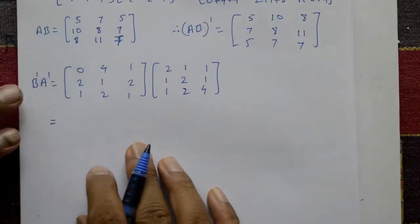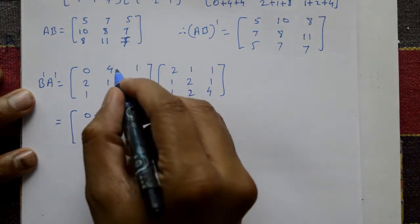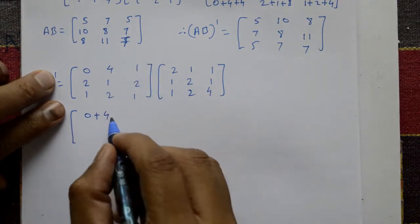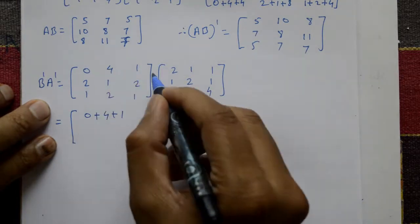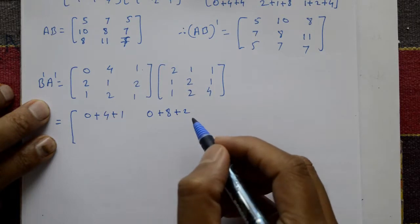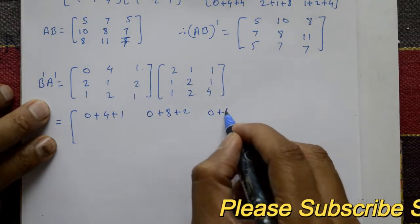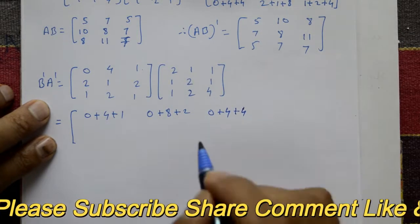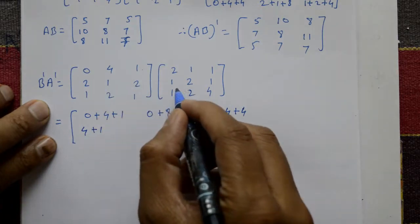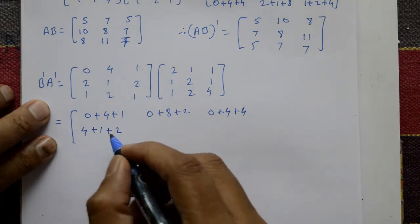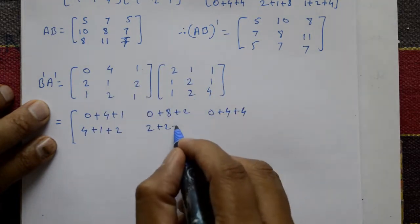Now matrix multiplication B dash into A dash. First row, first column: 0×2 = 0, plus 4×1 = 4, plus 1×1 = 1. First row, second column: 0×1 = 0, plus 4×2 = 8, plus 1×2 = 2. First row, third column: 0×1 = 0, plus 4×1 = 4, plus 1×4 = 4. Second row, first column: 2×2 = 4, plus 1×1 = 1, plus 2×1 = 2. Second row, second column: 2×1 = 2, plus 1×2 = 2, plus 2×2 = 4, plus 2×2 = 8.